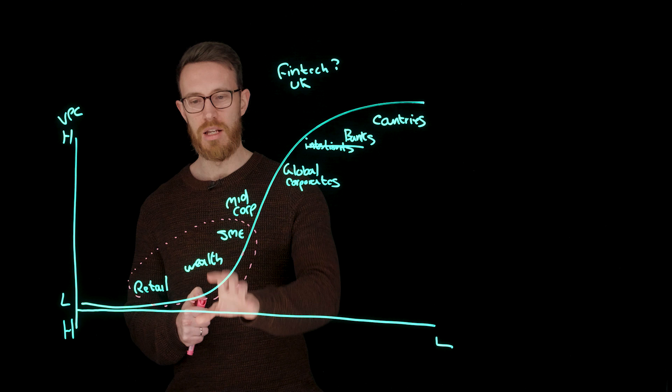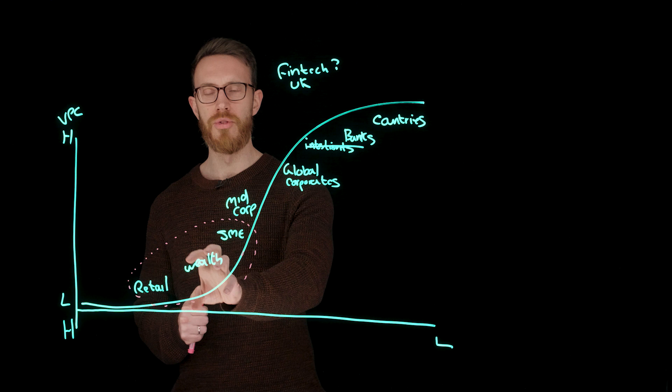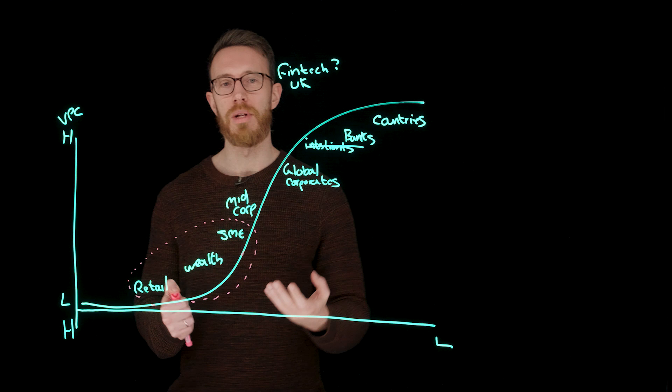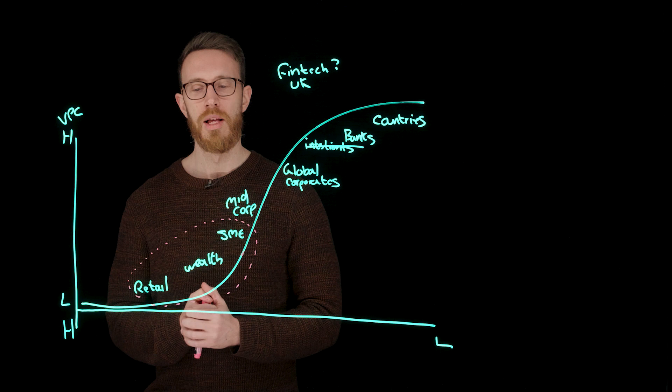You might also see in the wealth space, we've seen Nutmeg, and we've also seen Plum, and Moneybox, and Freetrade really come into that savings and investments and wealth space. And then in the SME space, in the small business space, what about companies like Tide and Coconut and even Starling starting to make real movements into that marketplace with a digital-only, tech-first type of offering?